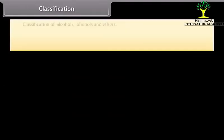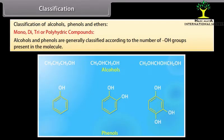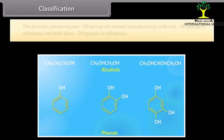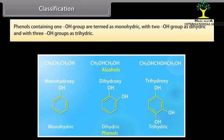Classification of alcohols, phenols and ethers. Alcohols and phenols are generally classified according to the number of hydroxyl groups present in the molecule. Alcohols containing one hydroxyl group are termed monohydroxy, with two hydroxyl groups as dihydroxy, and with three hydroxyl groups as trihydroxy. Phenols containing one hydroxyl group are termed monohydric, with two as dihydric, and three as trihydric.